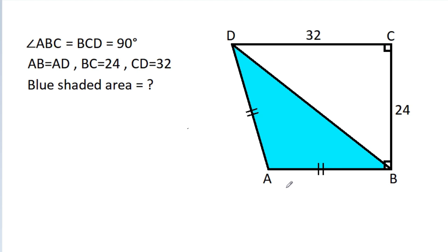In this video, we have been given that angle ABC is equal to angle BCD, that is 90 degrees, and AB is equal to AD. BC is 24, CD is 32. We have to find the blue shaded area.